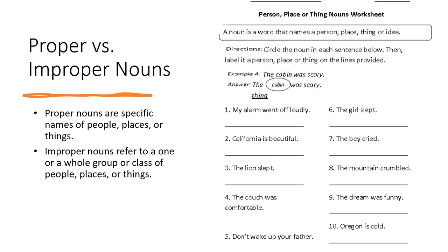Number five: 'Don't wake up your father.' Now, this might be a little tricky because in this sentence, the noun is at the end — father. And it would be a common noun or improper noun because we know that it's a father, but we don't know the name of the father. Number six: 'The girl slept.' Excellent. The word girl would be the noun, and that would be an improper noun.